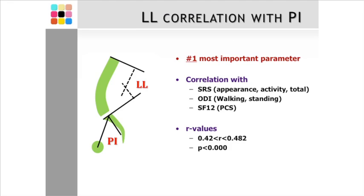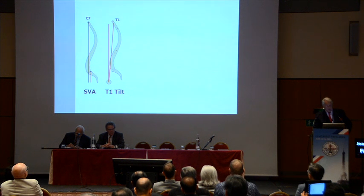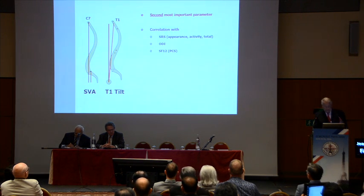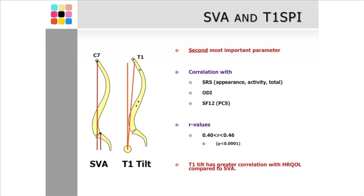Lumbar lordosis, correlation with pelvic incidence — it's a very important parameter. It correlates with the SRS appearance activity total and the ODI. But another very important one is the plumb line, which I call SVA. The second most important parameter is perhaps this angle between T1 and the hip. That also correlates with every value. So it's very important to keep this alignment.